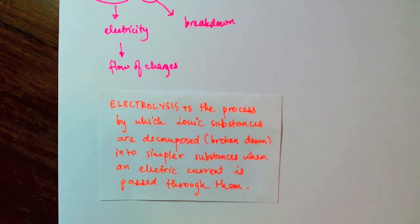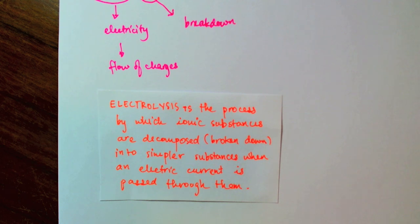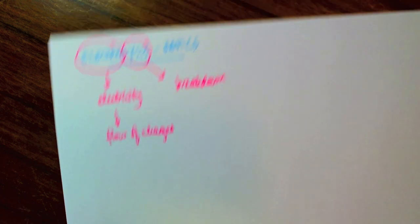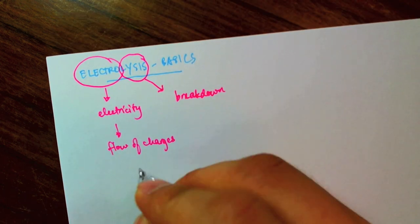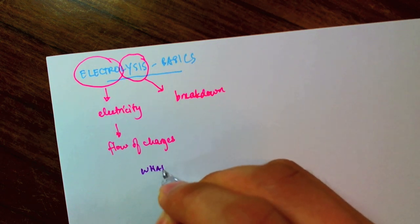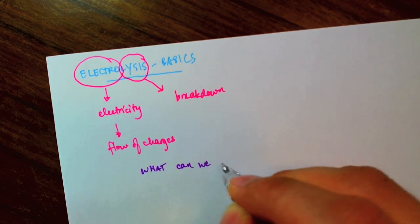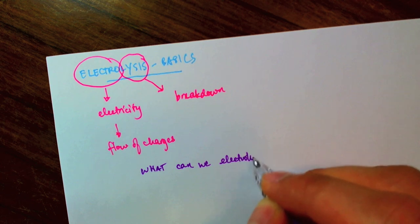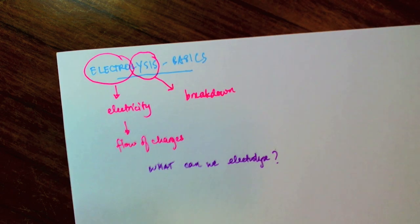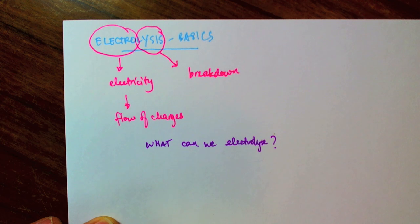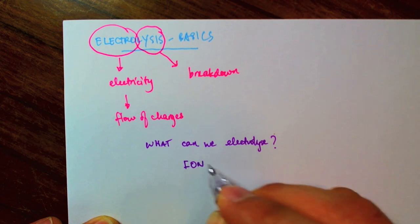So, the natural question to ask would be, what sorts of substances can be electrolyzed? So, what can we electrolyze? Well, we know that we need charges to flow. And what substances do we know have charges in them? Well, those would be ionic substances.